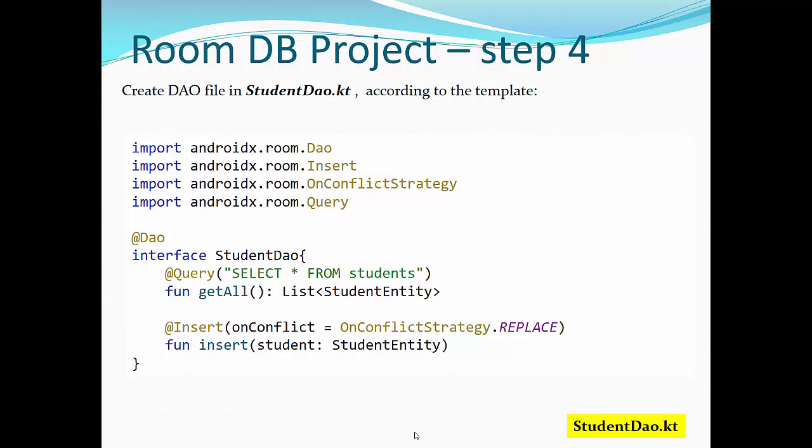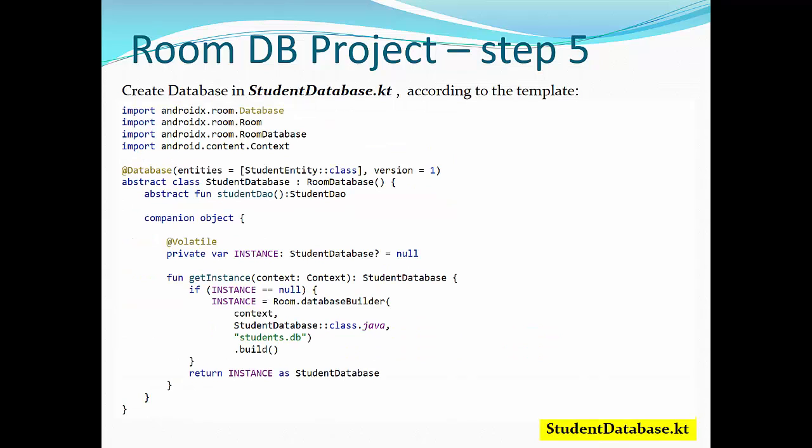Second file will be a DAO file in StudentDao.kt according to the template. We have here the content of this interface. It's annotated with @Dao. Interface StudentDao has two queries. One query selects all records from students database. It maps to Kotlin function getAll and returns a list of student entities. And insert method, inserting a record to the database with flag onConflictStrategy.REPLACE. If any conflict with database exists, the insert statement replaces the current conflicting record. And finally, insertStudent with one parameter with student entity will be mapping to a Kotlin function.